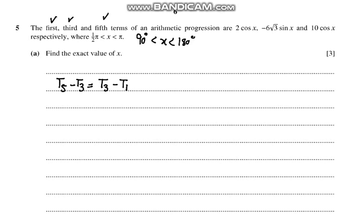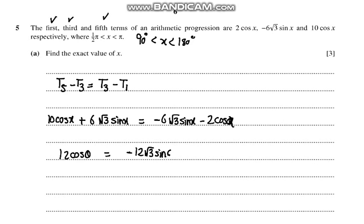So term five is 10cos(x) + 6√3sin(x) equals term three minus 6√3sin(x) minus 2cos(x). This would become 12cos(x) equals -12√3sin(x).